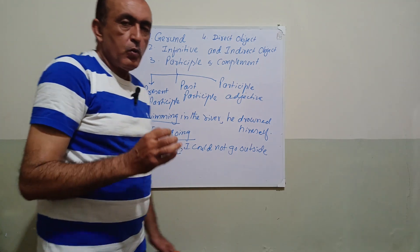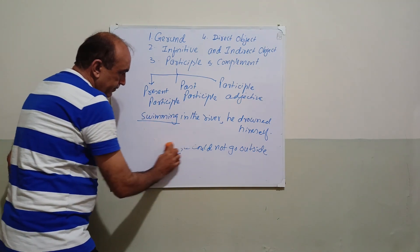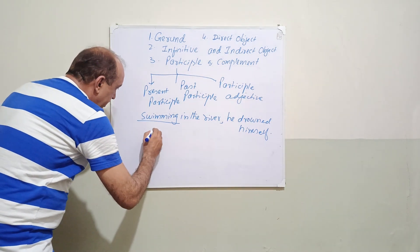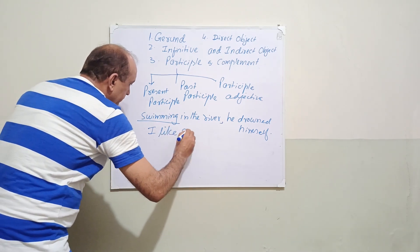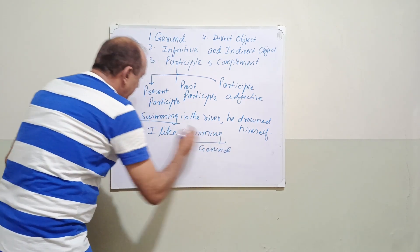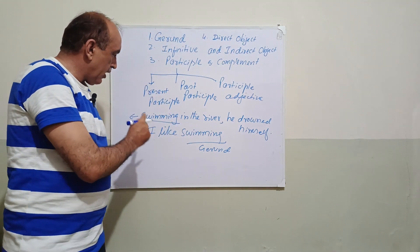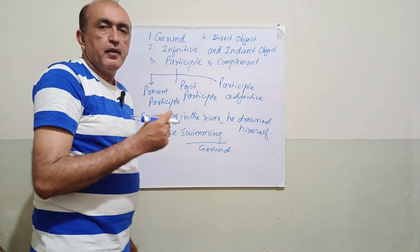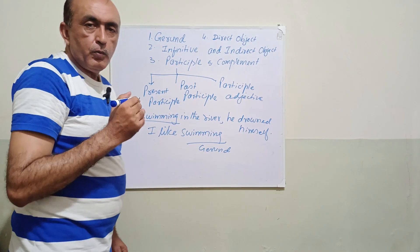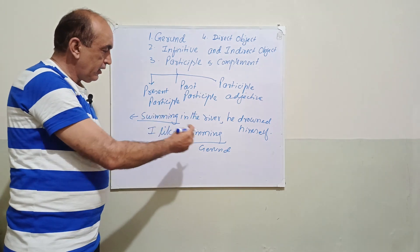A question arises: what is the difference between participle and gerund? Compare the examples: I like swimming — this swimming is gerund because it is a noun. Swimming in the river, he drowned himself — this swimming is participle, where swimming functions as a verb. This is how you can differentiate between participle and gerund.